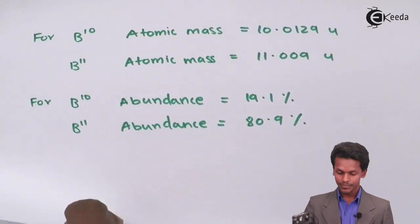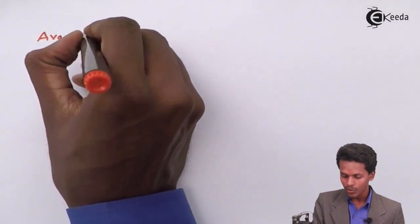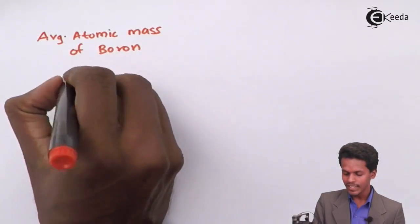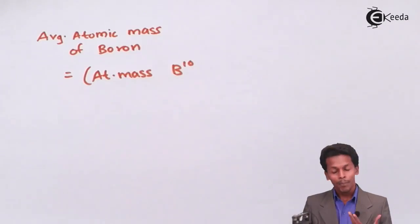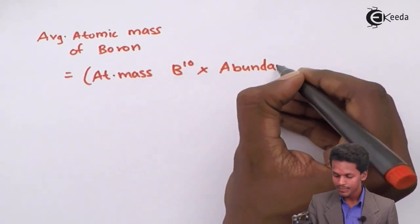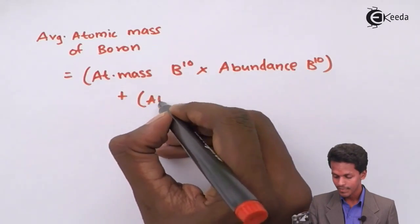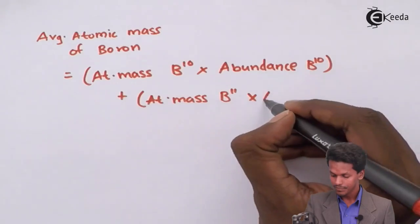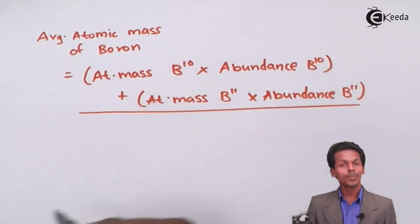The formula is straightforward. The average atomic mass of boron equals: (atomic mass of B10 × abundance of B10) + (atomic mass of B11 × abundance of B11), all divided by 100.